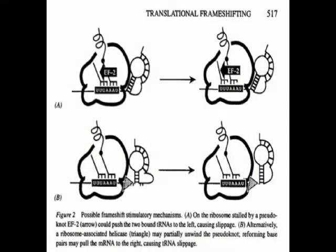That said, translational frameshifts are real. What happens is a ribosome, which translates mRNA into proteins, slips rarely during translation, resulting in a frameshift. The likelihood of this occurring can be increased by a sequence prone to slipping, and you could potentially use such a sequence to promote a translational frameshift. There are, however, several problems with this explanation.